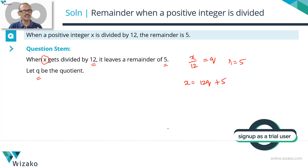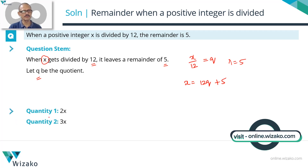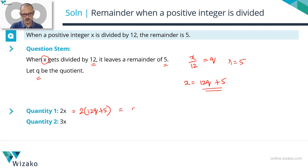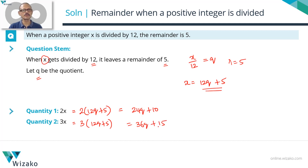Quantity A asks for the remainder when 2x is divided by 12, and Quantity B asks for the remainder when 3x is divided by 12. Let's express both 2x and 3x using our expression for x. 2x equals 2 times (12q + 5), which gives 24q + 10. And 3x equals 3 times (12q + 5), giving 36q + 15.